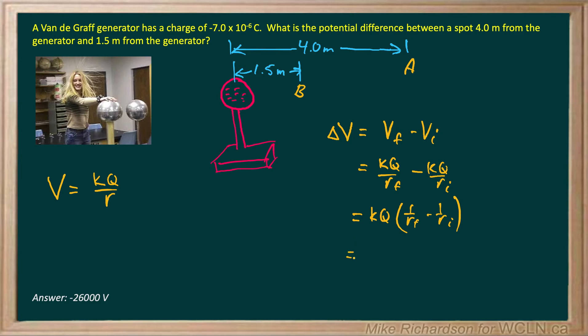Now I simply put in my values. 9 times 10 to the 9 for Coulomb's constant. Q was given as negative 7 times 10 to the negative 6 Coulombs. Our final was 1.5 meters. And our initial was 4 meters.